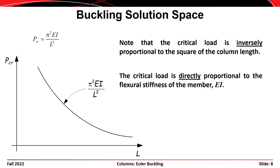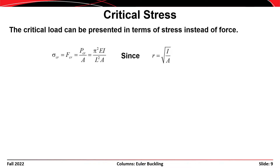If we plot this on a solution space with L as the independent parameter on the x-axis and the critical load on the y-axis, we see that the critical load is inversely proportional to the square of the column length, and directly proportional to the flexural stiffness EI. As length increases, strength decreases; as EI gets larger, the strength of the column also increases.